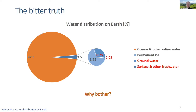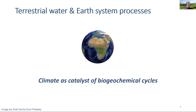There are several answers to this. One is that we as humans and societies depend on these freshwater resources. But we are also interested in Earth system processes — terrestrial water can, for example, act as a catalyst of biogeochemical cycles that are relevant for understanding ongoing climate change.